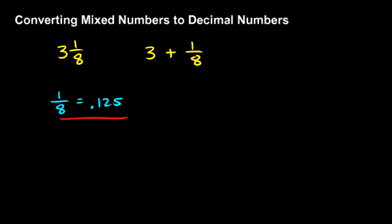This 1 eighth shows up a lot, so it's just helpful to remember that it's .125. If you don't remember that, you can just divide 1 divided by 8. And let's put some decimal places out here so we can work out the division.